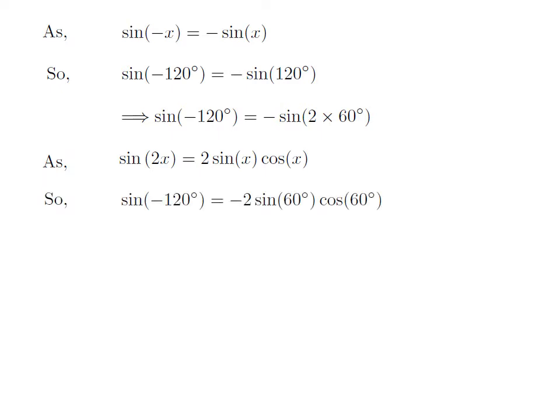Let us apply the above identity for sine of 120 degrees. Here x is 60 degrees, so sine of minus 120 degrees is equal to minus 2 times sine of 60 degrees into cosine of 60 degrees.